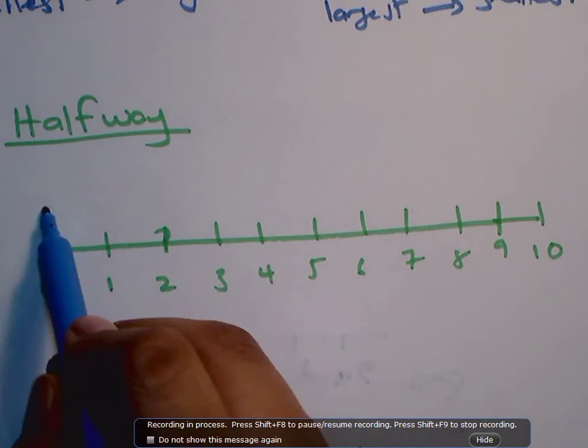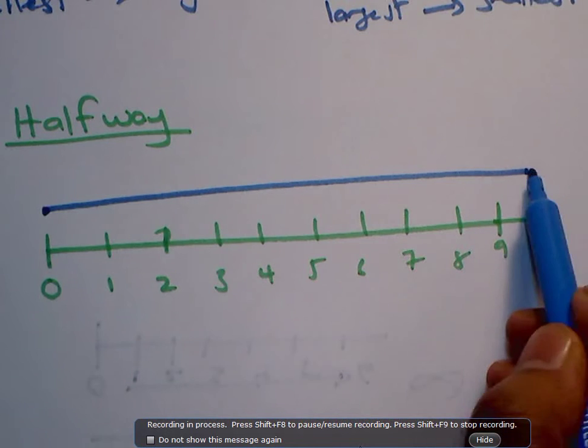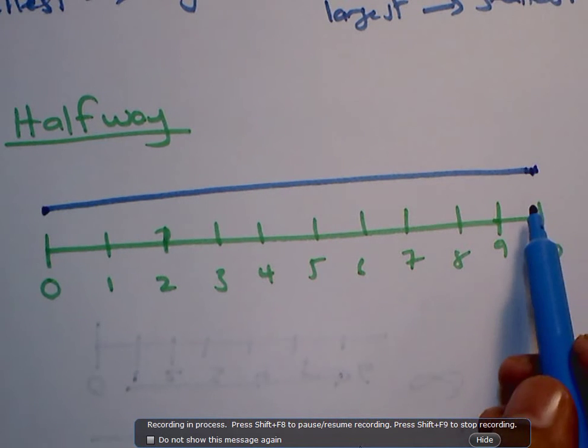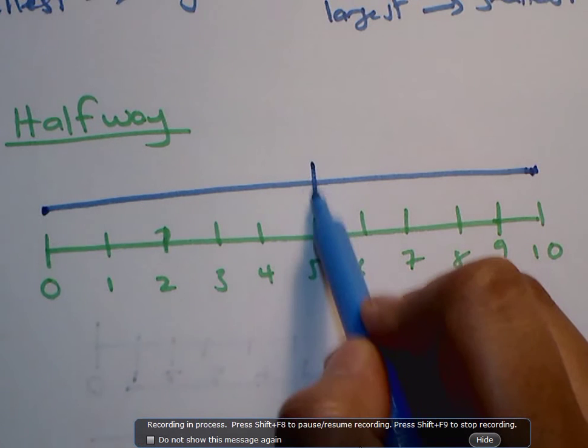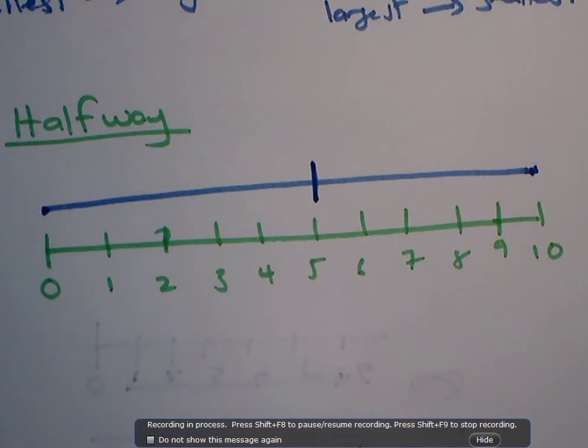So if I started from zero and I went to 10, then my halfway mark would be at 10 divided by 2 which is 5. So my halfway mark would be 5. So half of 10 is 5.